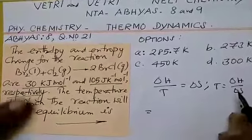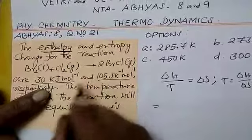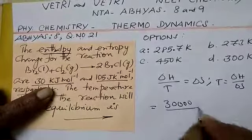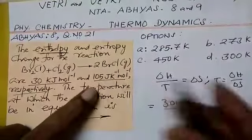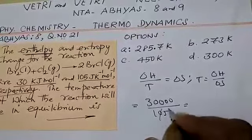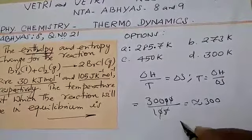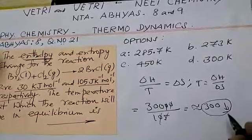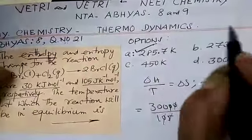Let us substitute the formula values. Enthalpy is 30 kilojoule, convert to joule divided by ΔS entropy 105 joules. Approximately we take it as 100. This gets cancelled, approximate answer is 300. If denominator increases by 5, it should be less than 300, nearing 300. Your answer is 285.